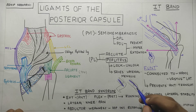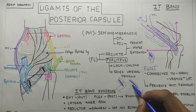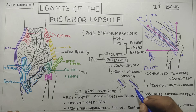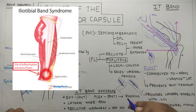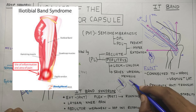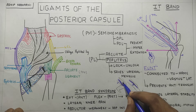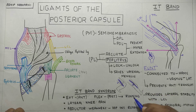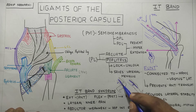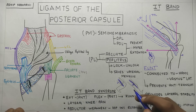In IT band syndrome, there is excessive friction of the IT band over the lateral condyle of the femur, which causes lateral knee pain. This often occurs in runners because when the knee is in extension the IT band is anterior to the lateral condyle, whereas when the knee goes into flexion the IT band goes posterior to the condyle. So when you are running there is movement of the IT band anterior and posterior to the condyle, which causes a lot of friction and can irritate the IT band — this is called IT band syndrome.